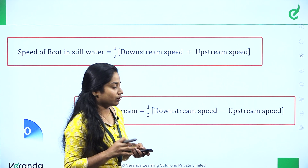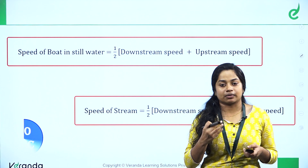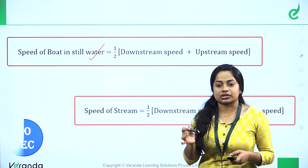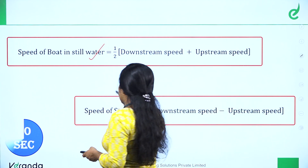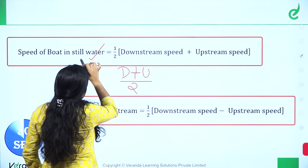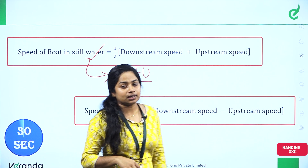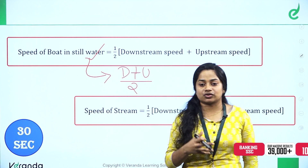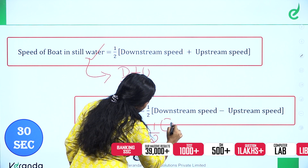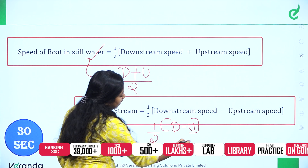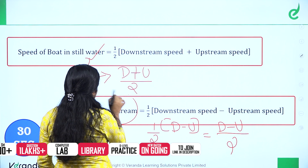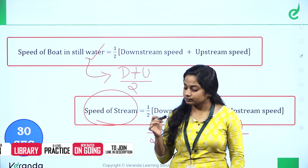The speed of the boat in still water equals half times the downstream speed plus the upstream speed — that is, downstream plus upstream divided by 2. The speed of the stream equals half times the downstream speed minus the upstream speed — that is, downstream minus upstream divided by 2.